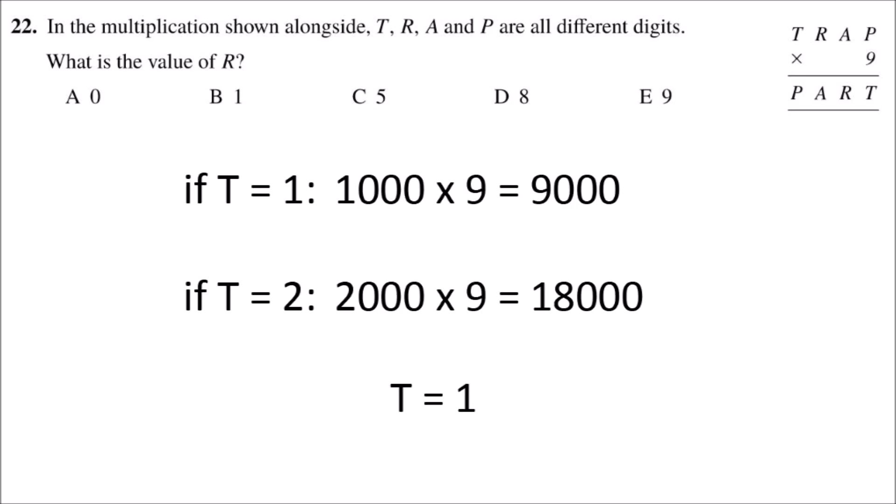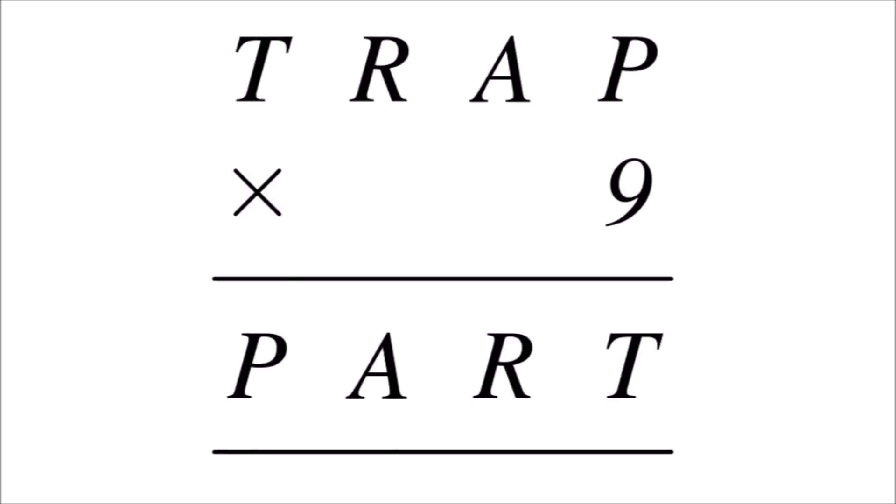First of all, because a four-digit number multiplied by nine gives another four-digit number, that means the first letter T cannot be more than one, because if it was, it would make a five-digit number, so T must be one.